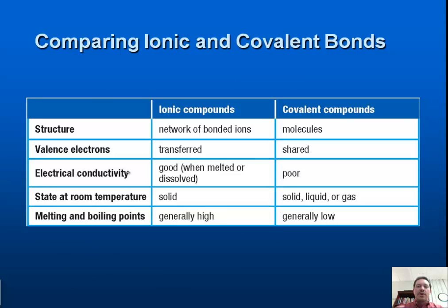Comparing and contrasting those two types of bonds: ionic compounds have a very networked, very fixed structure, whereas covalent compounds are viewed as being molecules — different items bonded together. As far as valence electrons go, in ionic compounds the electrons are transferred from one atom to another. When they're transferred, they're referred to as ions. With covalent compounds, the electrons are shared.